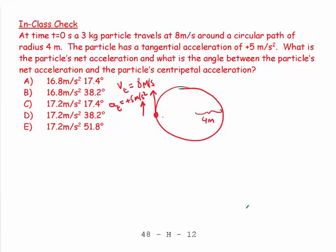And what is the angle between the particle's net acceleration and the particle's centripetal acceleration? So let's put these things into our diagram. Here's my centripetal acceleration, AC. I'm going to draw my AT there. And there's my A. That's what I want. And I want the angle here.